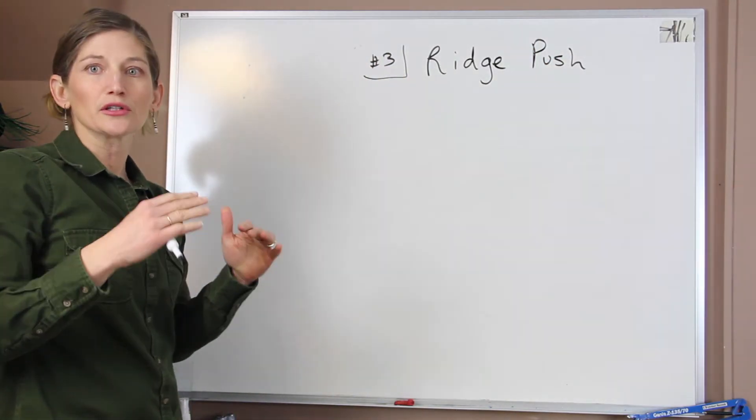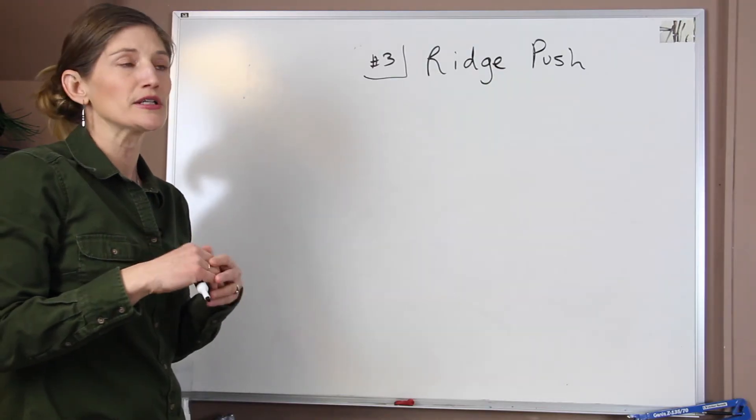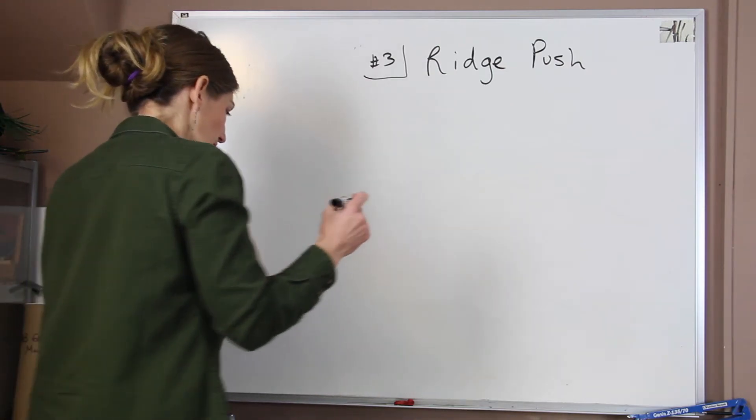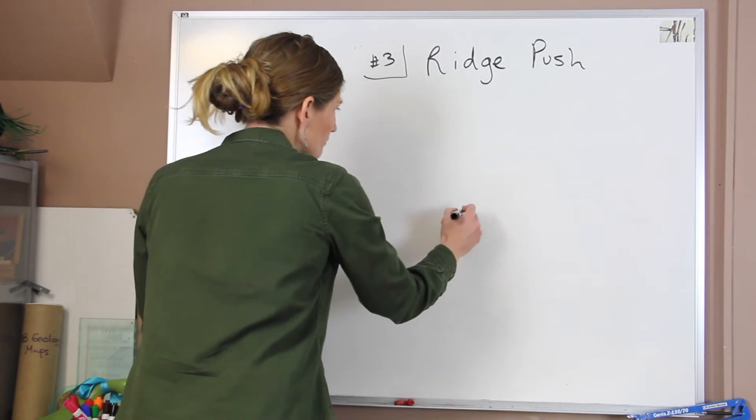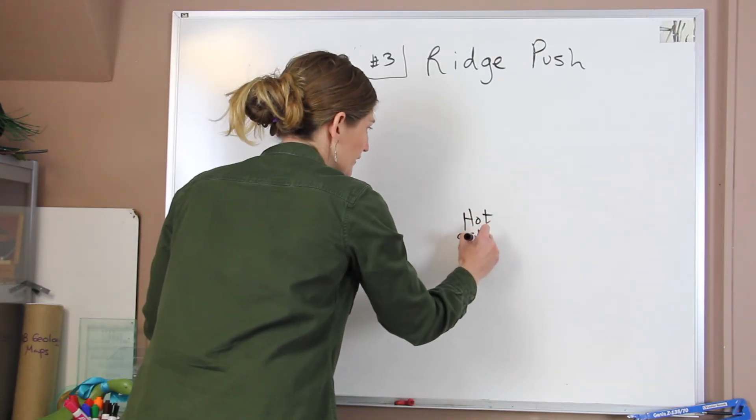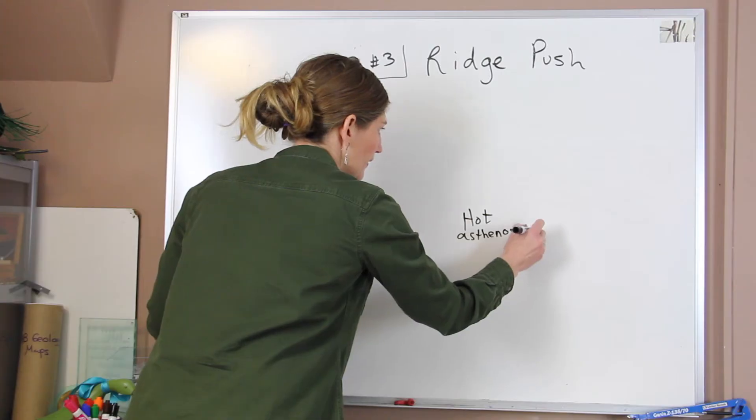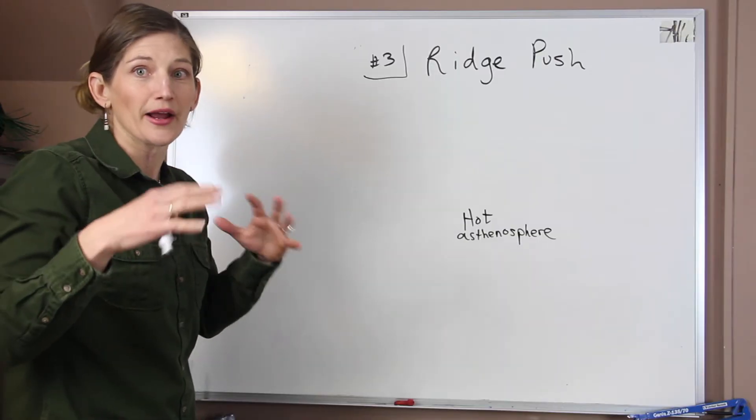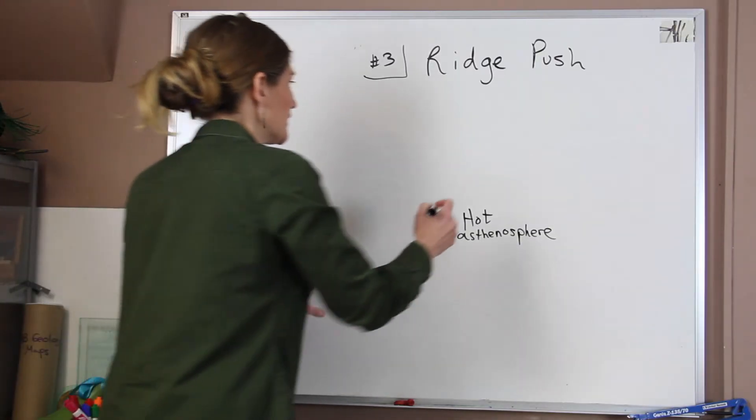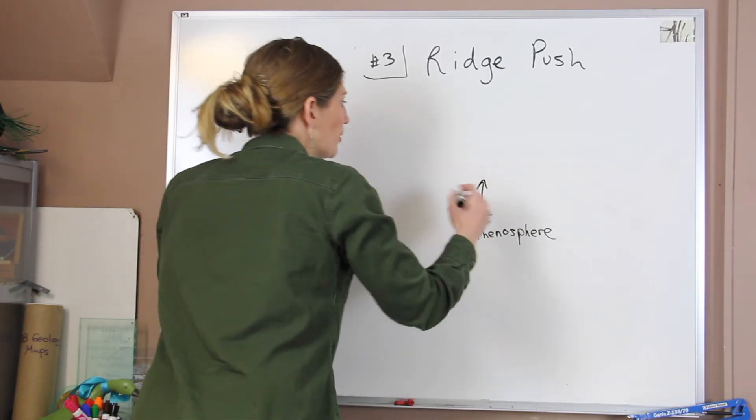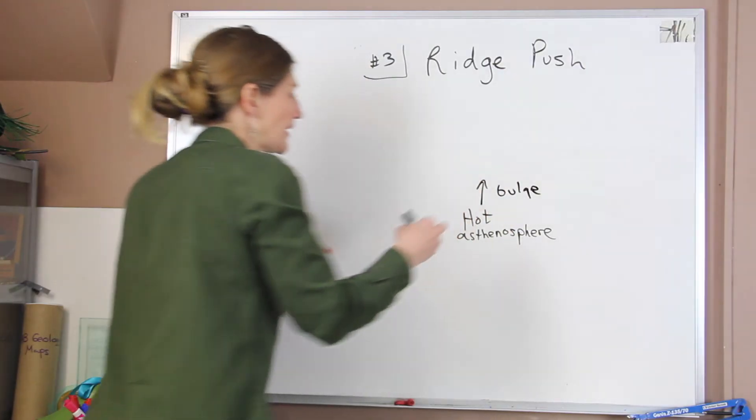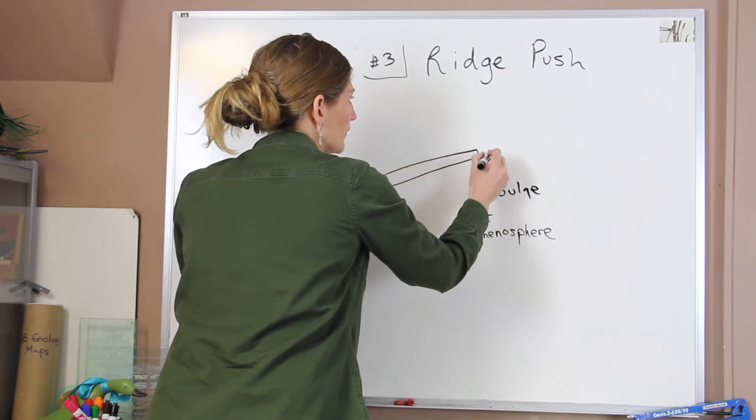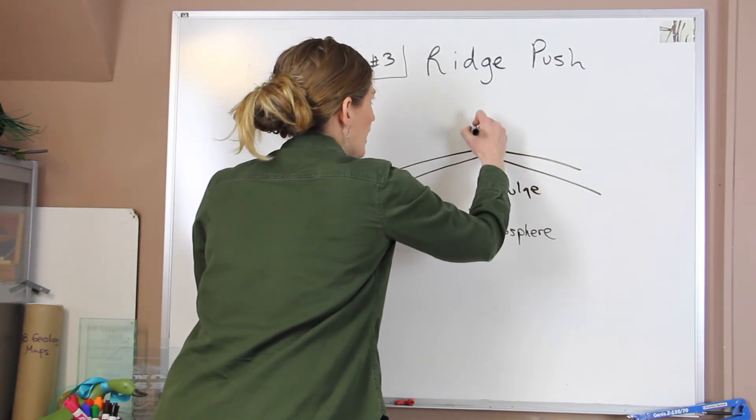Now ridge push really goes to look more at our rift zones or divergent plate boundaries. This can happen in our oceanic plates as well as our continental plates. But basically what starts to happen is we have very hot asthenosphere. And we know that hot materials, the molecules start to move apart. We are more energetic. They move apart and they expand. And that actually starts to create this kind of bulge of mantle material. It rises up and it pushes the overlying lithosphere up and away. And so that's what creates our zone. So this rises up.